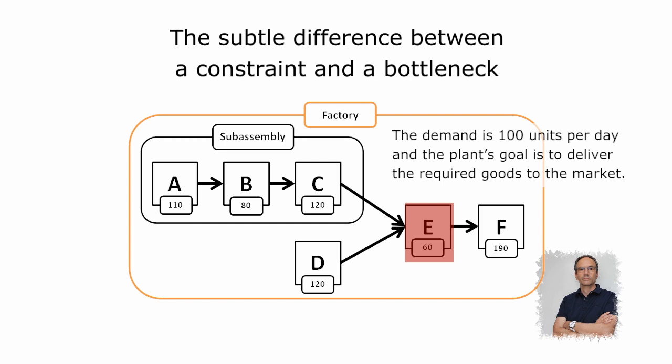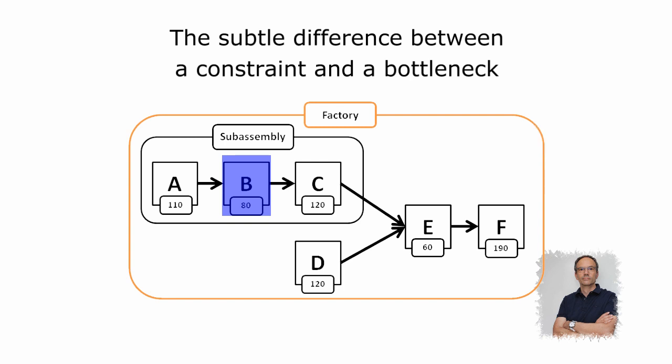It is primarily E which hinders the plant from delivering 100 units a day. The distinction between bottleneck and constraint is very important, because working to improve throughput on B is of little interest as long as E keeps being the limiting factor of the whole system. If we improve throughput of B, all other things being equal, the additional parts manufactured in sub-assembly would wait in front of the assembly line, extending the queue of work in progress.